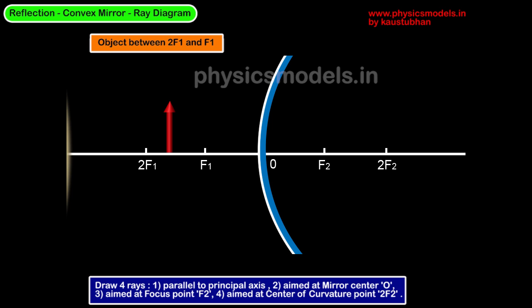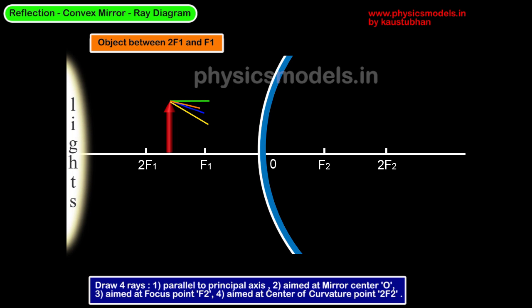Here's the object between 2F1 and F1. Bring on the lights from the left. The rays of light will go from left to right because the lights are behind the arrow. We draw the four rays that we have drawn before: the green ray, the orange ray aimed at 2F2, the blue ray aimed at F2, and the yellow ray aimed at O.